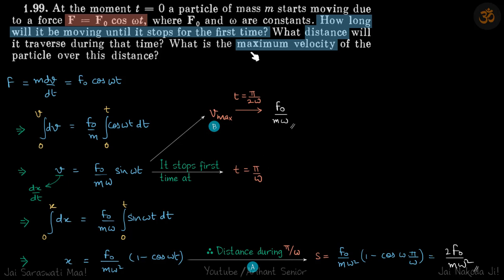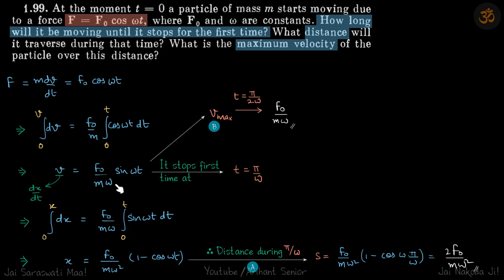For the third part — maximum velocity during that time — the velocity expression shows it is maximum when sin(ωt) = 1, and that happens when ωt = π/2, meaning t = π/(2ω). The maximum velocity v_max is simply F₀/(mω).